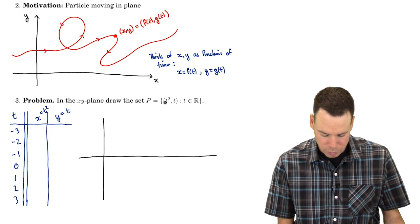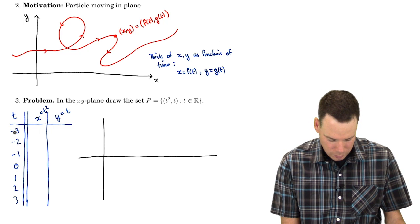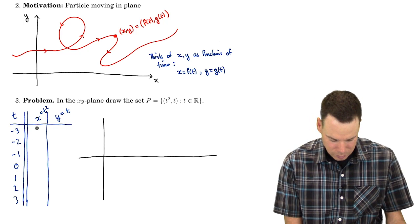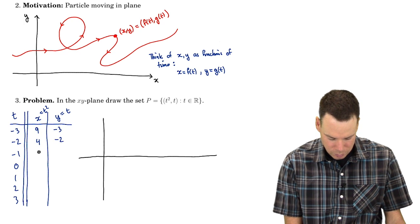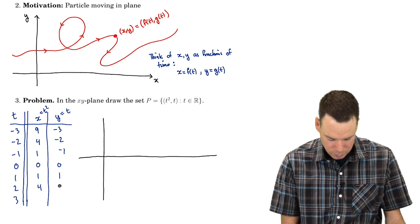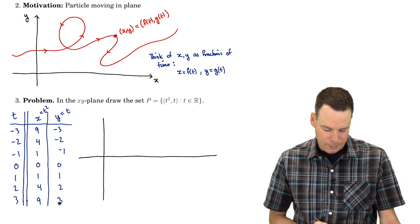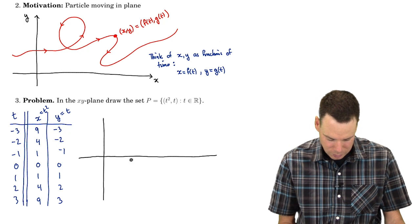I'll work out the corresponding points: x is just the square of the t value, y is just t itself. So the points are (9, −3), (4, −2), (1, −1), (0, 0), (1, 1), (4, 2), and (9, 3). So I've got seven points in total.